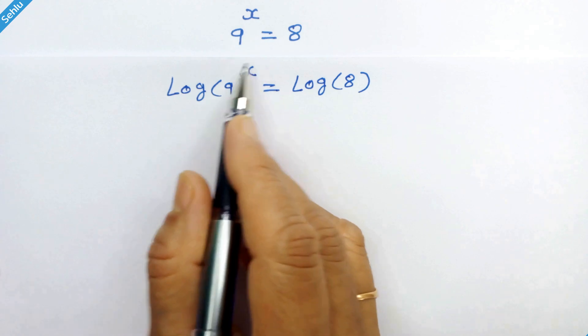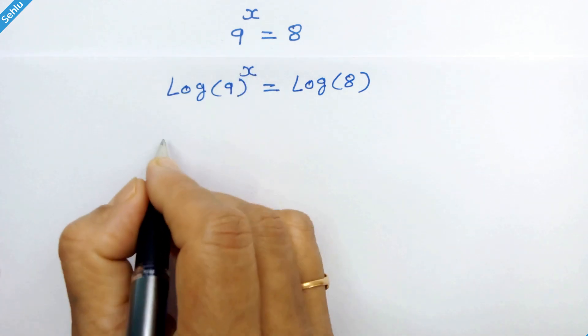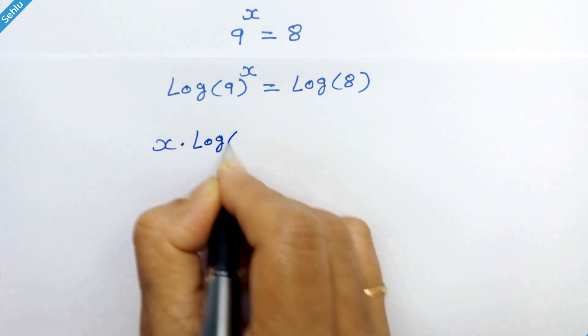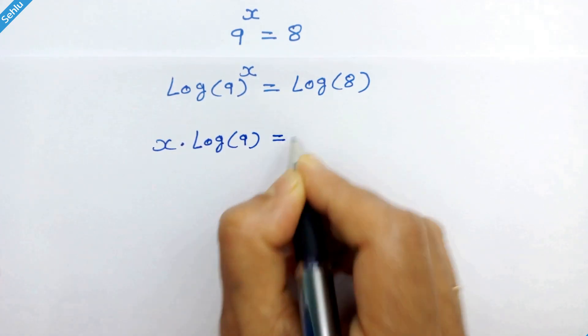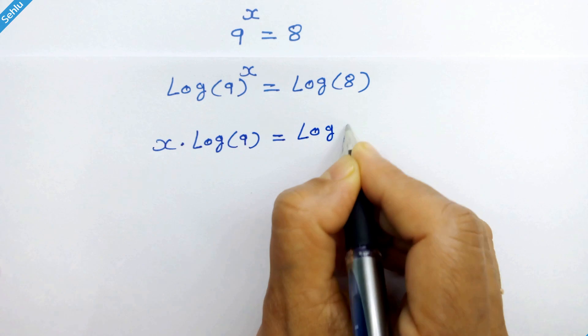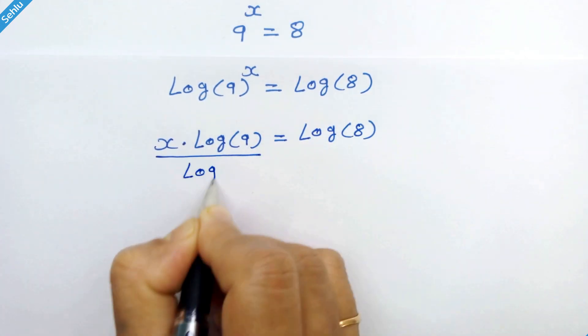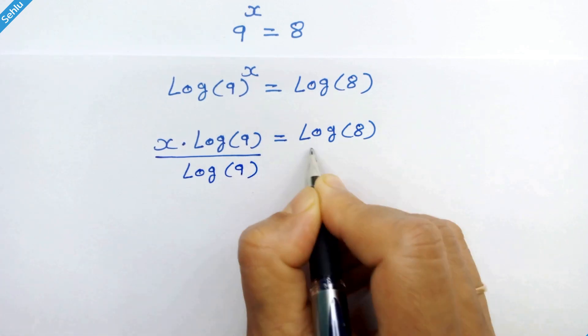As per the rule, this x will be placed here, so it will be x times log of 9 is equal to log of 8. Now we will divide by log of 9 on both sides.